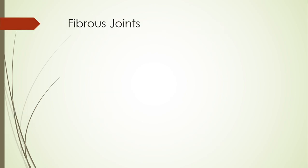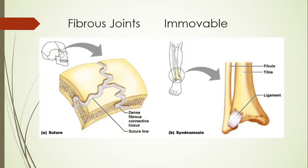Fibrous joints are known as immovable joints. Where these two or more bones are meeting, there is actually no movement between them. I know it sounds a bit counterintuitive — surely you want a joint to have movement — but there are certain places in our body where we don't want any movement to occur. For example, if we look at your skull — your cranium — your cranium is not just one bone.